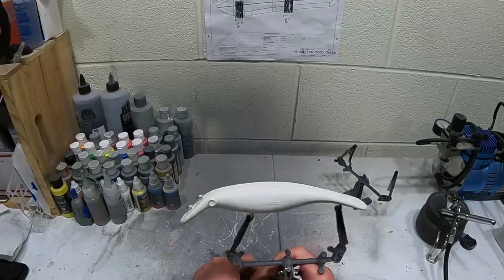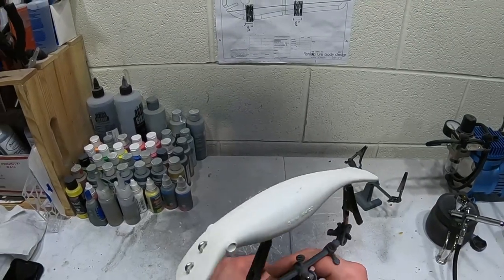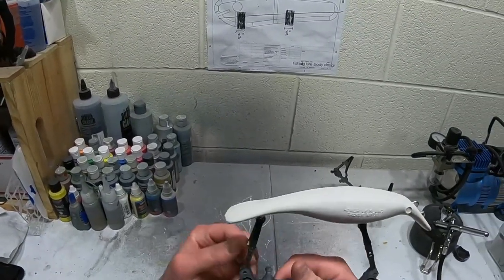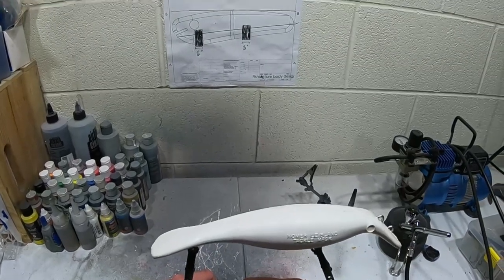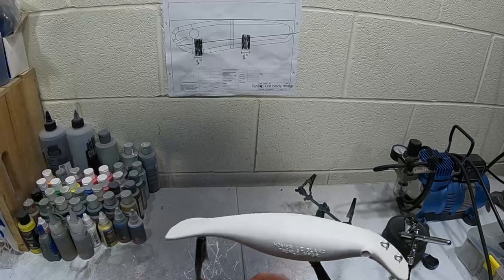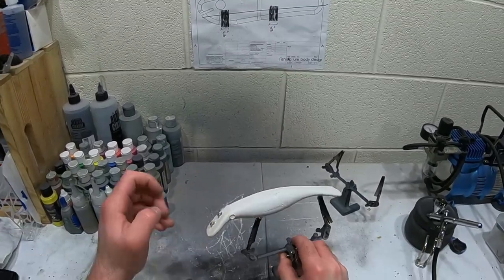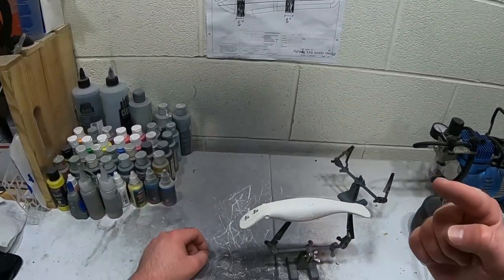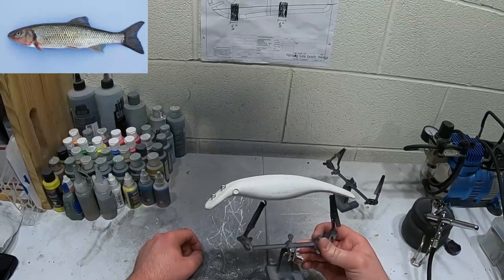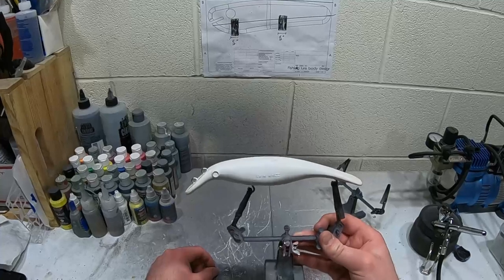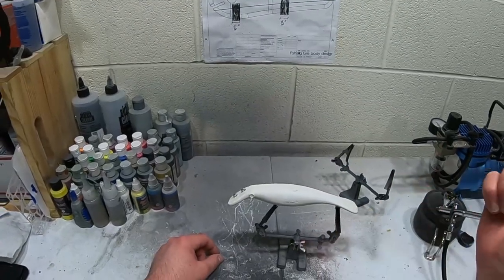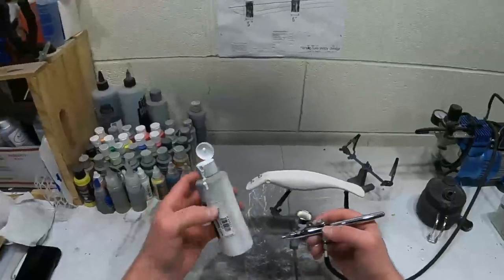Alright guys, today we're going to be doing another swimbait. We're going to make this kind of like a fall fish. I'll show you guys what a fall fish is - I'll put one up on the screen here if you don't know what one is, just so you can see what I'm trying to make. Alright, so let's get right into it.